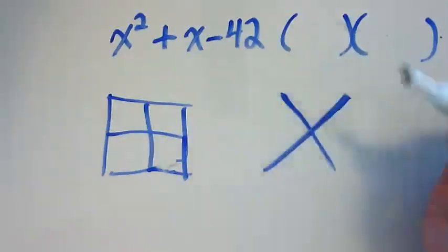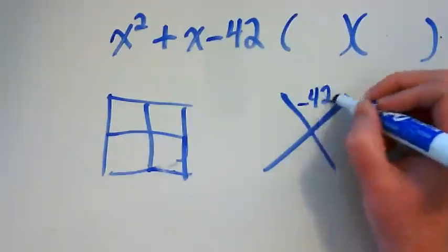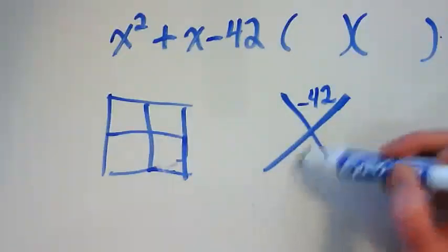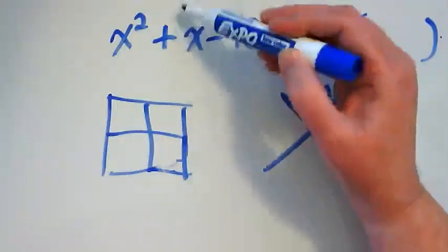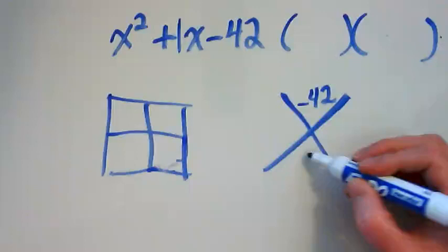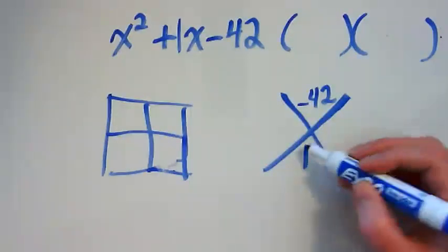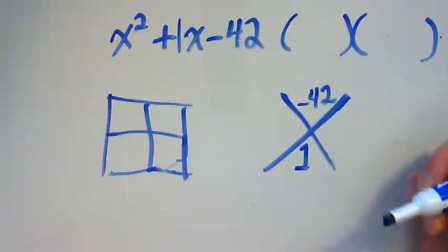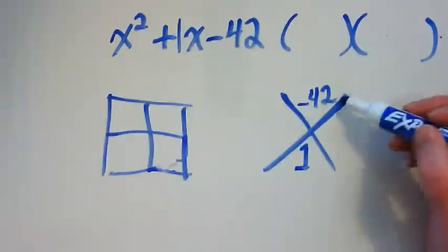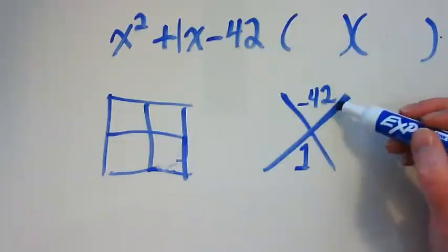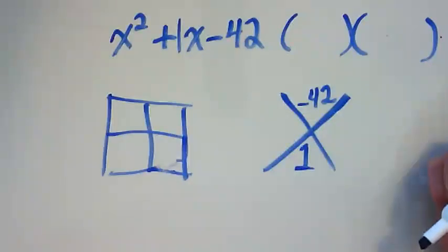So we have negative 42 would go at the top of our puzzle. And what goes down in the base of this puzzle is what's here in front of that x, and it's a 1. And what we're going to look for are two numbers that when I multiply them together, I get negative 42. When I add them together, I get positive 1.